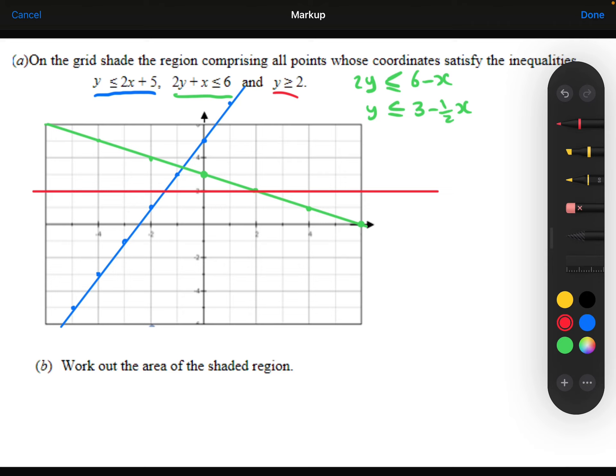We need to shade the region. So let's just remind ourselves it has to be less than on the blue line, so below the blue line. So that's anything here, that's below the blue line.